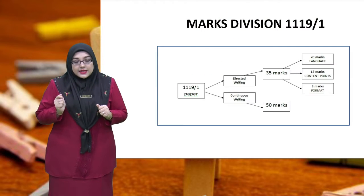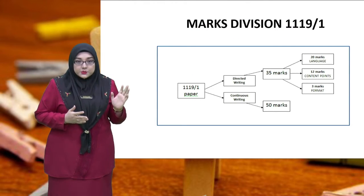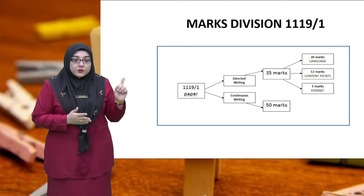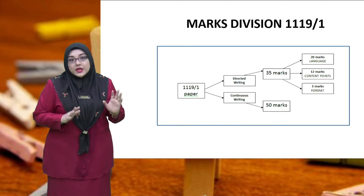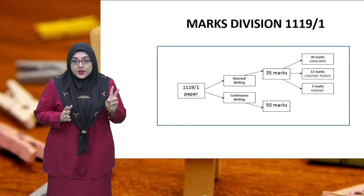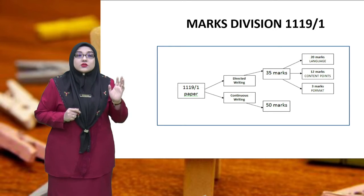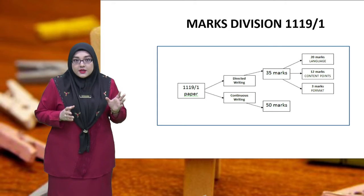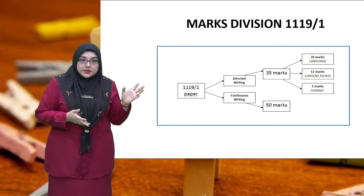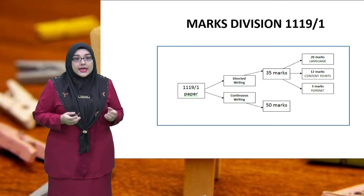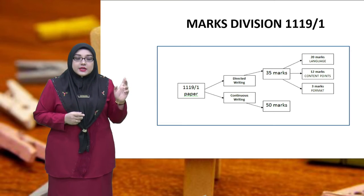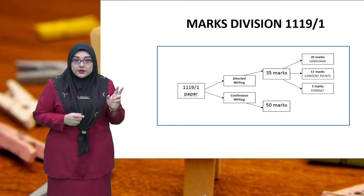Let's move on to mark division for 1119/1. This mind map represents the mark division for 1119/1 paper. As you all know, there are two sections for 1119/1: Section A, directed writing, and Section B, continuous writing. Let's refer to directed writing as DW and continuous writing as CW. For DW, the total marks are 35.